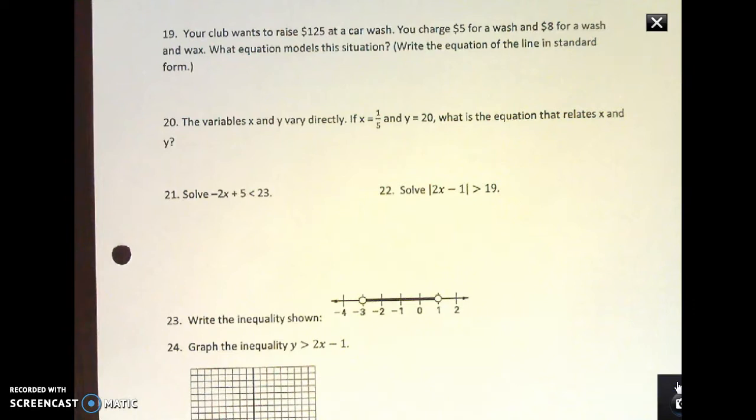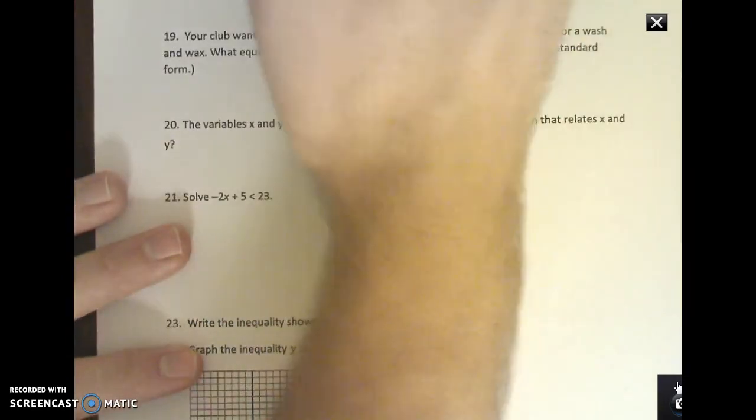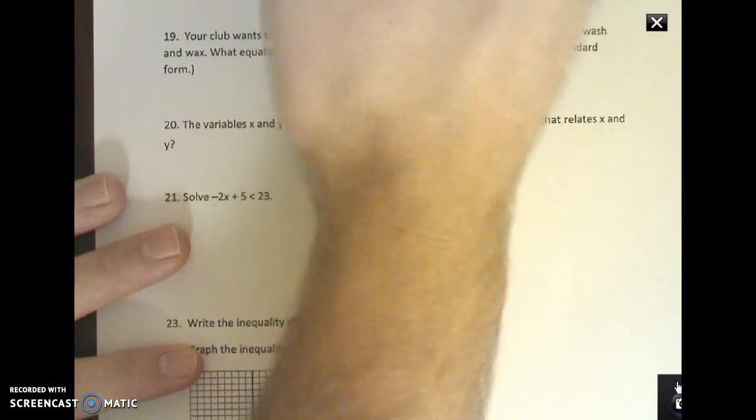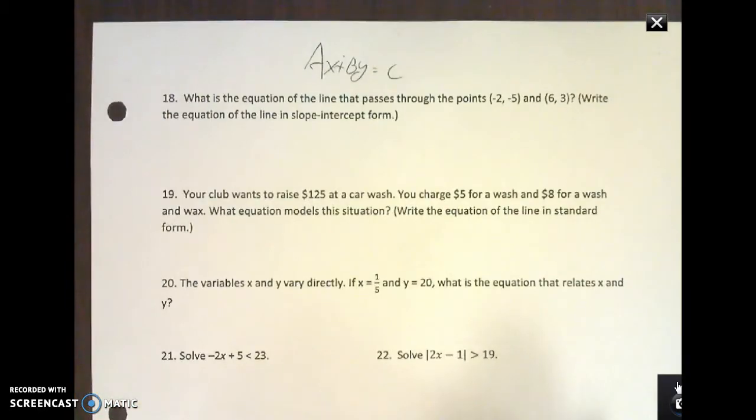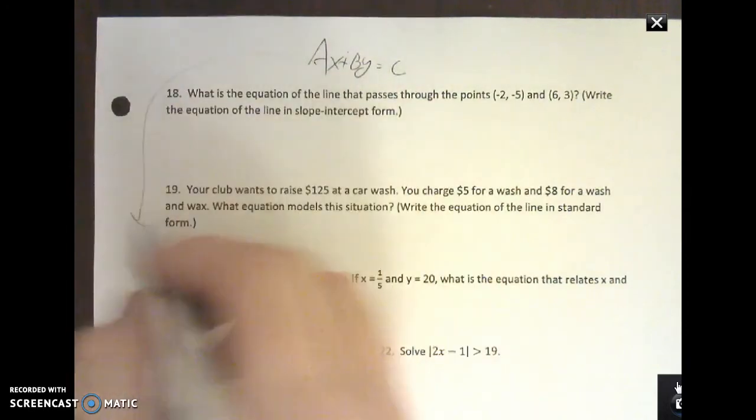Your club wants to raise $125 at a car wash. You charge five dollars for a wash, eight dollars for a wash and wax. What equation models the situation? Write the equation in standard form. Standard form is in the form of ax plus by equals C. I didn't realize that wasn't there, so I'll just do 19 first while I read that one.